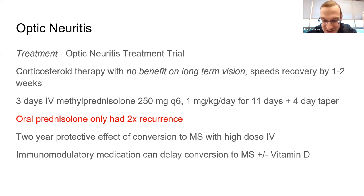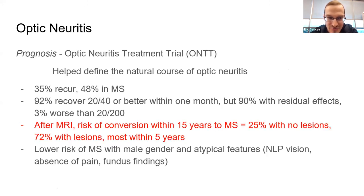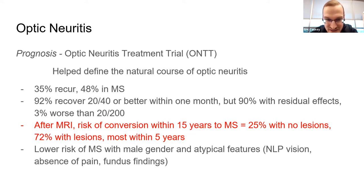Oral steroids are not used anymore — watch for old questions that are straightforward about this, but oral prednisone increases the risk of recurrence. They won't ask about specific MS drugs. There's the classic 25-50-75 rule for risk of conversion to MS: no lesions on MRI means 25% risk of converting in 15 years; lesions present means about 75%; no MRI gets done is around 50%.